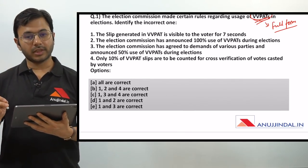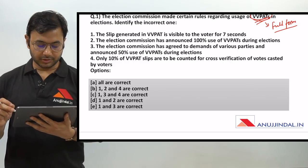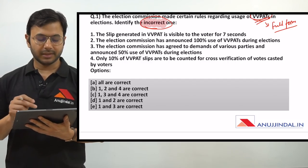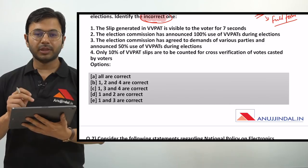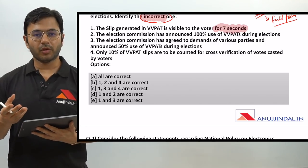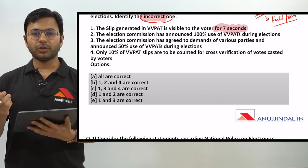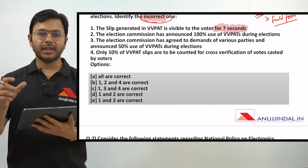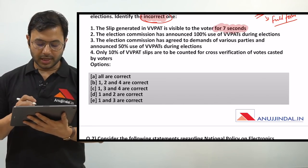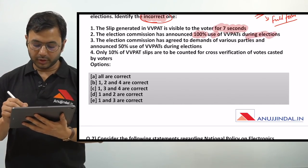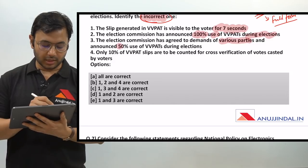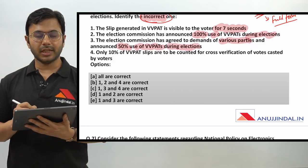The election commission has made certain rules regarding usage of VVPATs in elections - identify the incorrect one. The first point is the slip generated in VVPAT is visible to the voter for 7 seconds. I am sure all of you have voted in the recent elections and therefore you must be aware about for how many seconds you saw that slip which came out of the VVPAT machine. The election commission has announced 100% use of VVPATs during elections.